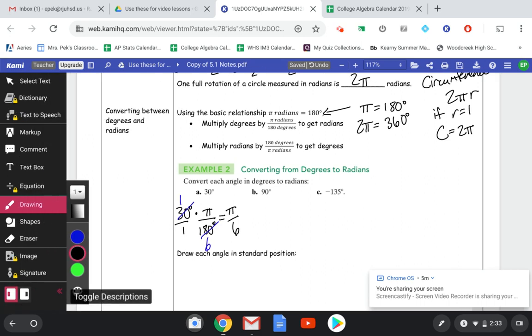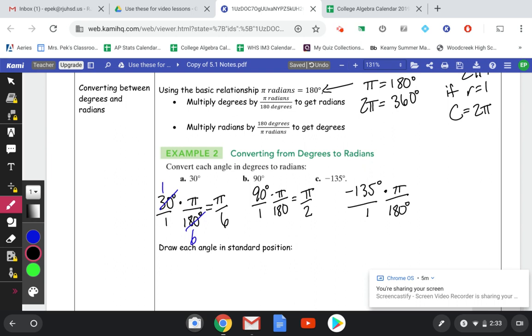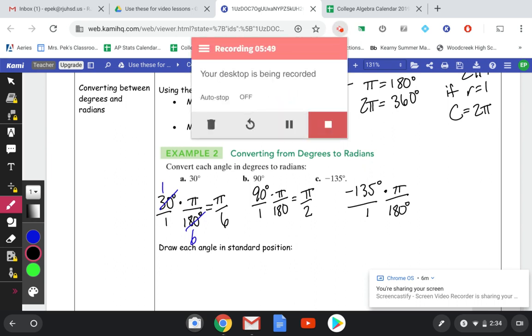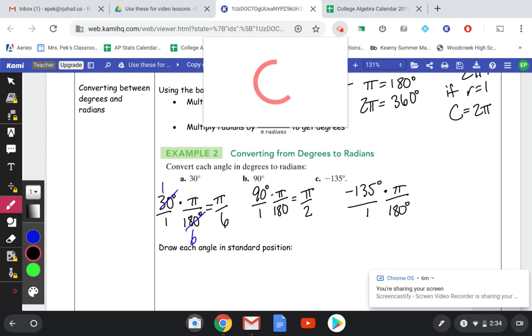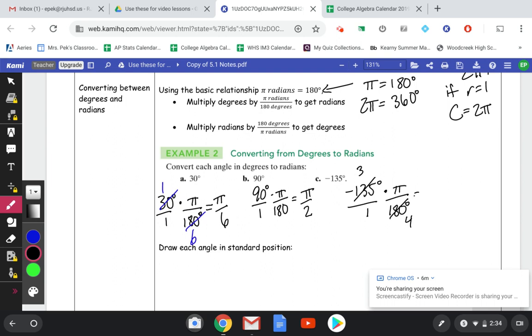And then we've got 90 degrees times pi over 180. 90 goes into 180 two times, so this is pi over 2. Negative 135 degrees times pi over 180 degrees. We can actually divide our 135 and 180 by 45, and we get 3 and 4. So this is going to end up being a negative 3 pi over 4.